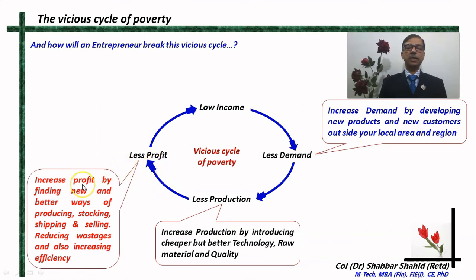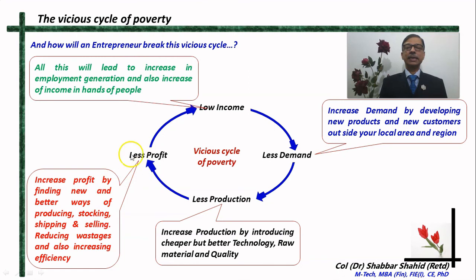Then they can increase their profit. How? By finding new and better ways of producing things — better manufacturing technology, better ways of stocking the material, better ways of shipping the material, better ways of marketing and selling, reducing wastages, and increasing the efficiency of their production. In all these ways, entrepreneurs can increase their profit. And once they do that, it will ultimately lead to an increase in employment generation and increase in money in the hands of people. And when money increases in the hands of people, they will automatically increase the demand for various goods and services.